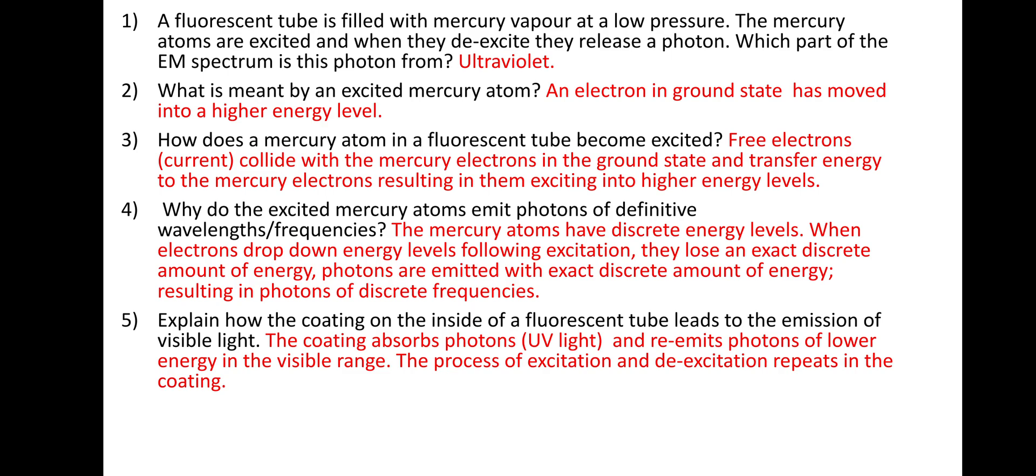And the last one, explain how the coating on the inside of the fluorescent tube leads to the emission of visible light. Well, as we talked about a moment ago, the coating would absorb the photons of UV light, and then re-emit photons of lower energy that are in the visible range. So just to make sure that we know, the process of excitation and then the de-excitation, dropping back down energy levels, repeats itself in the coating. So that process occurs twice.